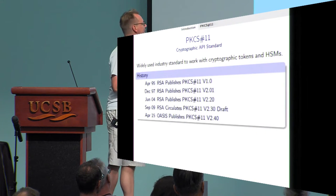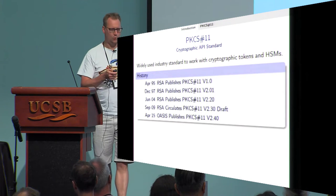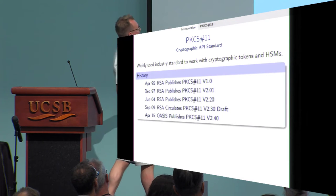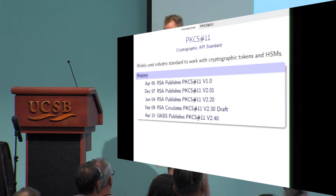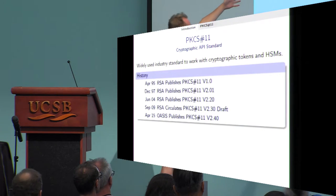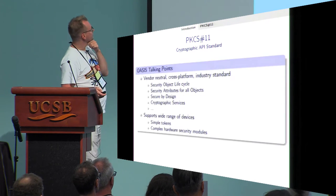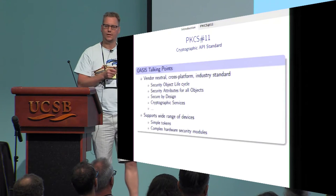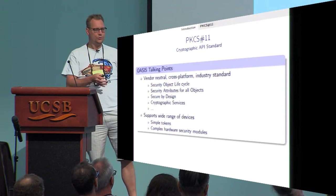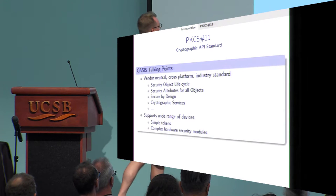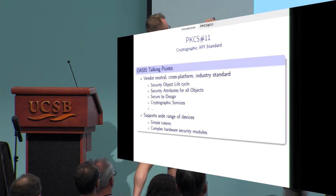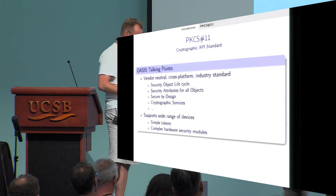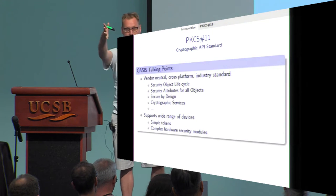Here is a little history on PKCS#11, to give you an idea of the complexity of dealing with the full standard. It started in 1995 with the first version by RSA, and 20 years later ownership of the standard had moved to OASIS, which published version 2.40. It supports multiple devices — so you might have lots of tokens — and bear this in mind.